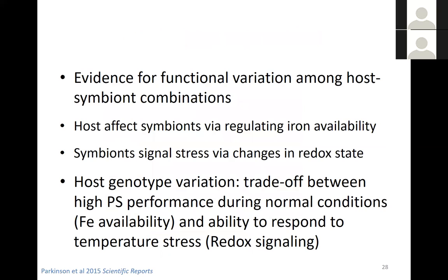The two host genotype groups differ in photosynthetic efficiency of the symbiont strain — remember, they all share the same symbiont strain. The first group had a small delta QM — less efficient under normal conditions but steady performance under stress. The second group was more efficient under normal conditions but showed large differences between hot and cold treatments. Remarkably, when we looked at host gene expression in those two groups, we found the opposite effect: host genotypes that kept symbiont performance constant showed large gene expression responses — the host changed a lot to keep its symbiont performing steadily. Host genotypes where the symbiont delta QM changed a lot showed almost no host gene expression response to the stress. This provides evidence for functional variation among host-symbiont combinations, suggesting the host affects symbionts perhaps by regulating iron availability, and the symbiont signals stress to the host through changes in redox.